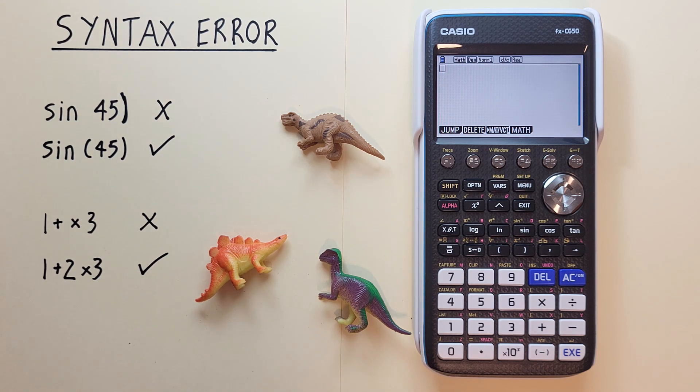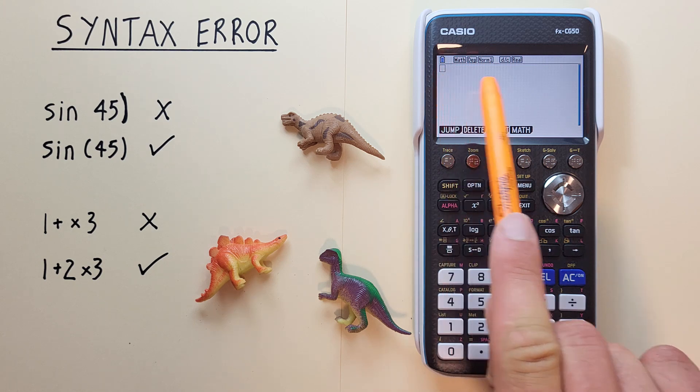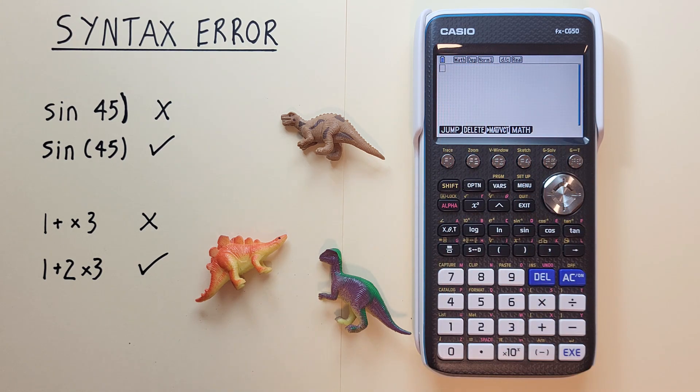For this example we'll be using the Casio FX CG50 but this is applicable to pretty much all scientific and graphing calculators.